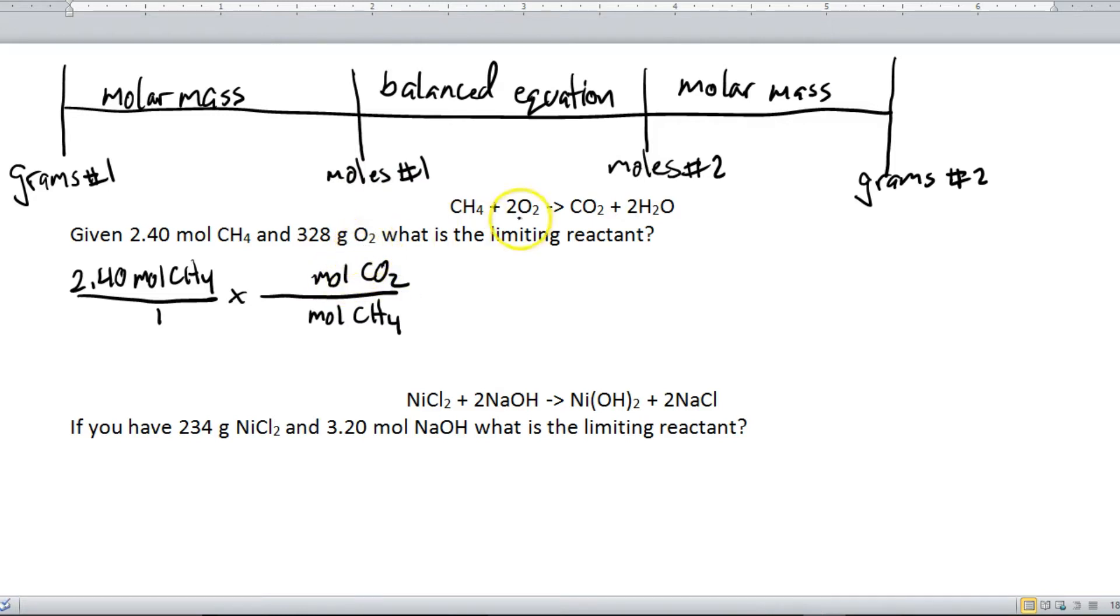I'm going to take my numbers from the balanced equation. Right, so there's a 1 there and a 1 there. Okay, so I multiply cross. This is really easy. I don't need a calculator. The answer is 2.40 moles of CO2. Okay, well that's the first calculation.